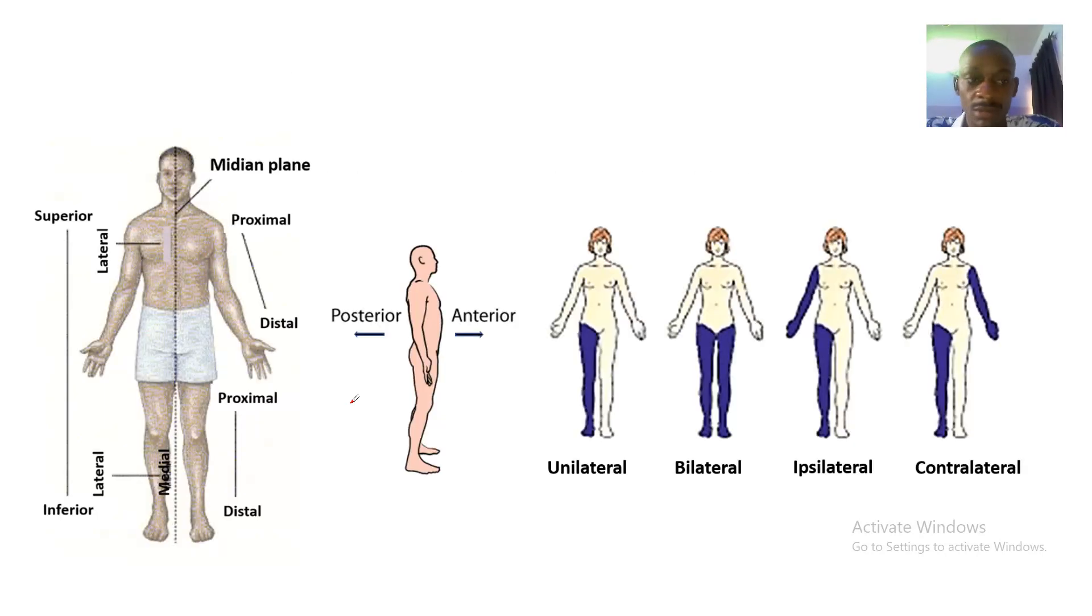This is just an image where you see the unilateral, the bilateral, the ipsilateral, and the contralateral. All these words start with different alphabets and end with the word lateral, so they are collectively called terms of laterality.